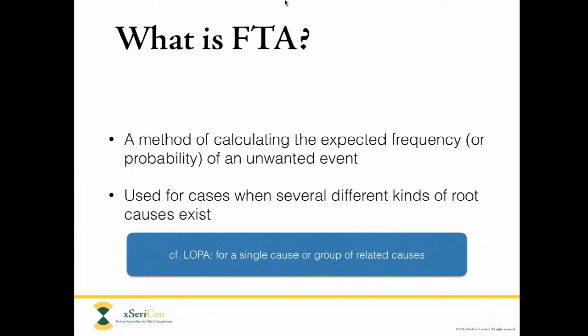Fault tree analysis gives you an extra layer of complexity in that it allows you to combine a whole lot of different causes, which may have different kinds of factors and layers of protection associated with them. It's a very nice and powerful step up from LOPA. You might ask why bother with LOPA at all. Fault tree analysis is rather complex and it's easy to get lost in the calculations and make mistakes. LOPA's relative simplicity reduces error and helps the team stay on track and understand the results.